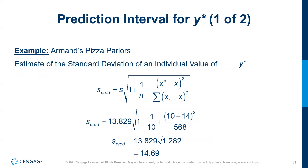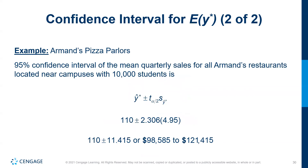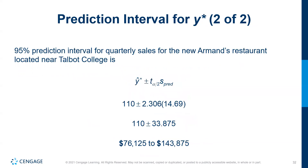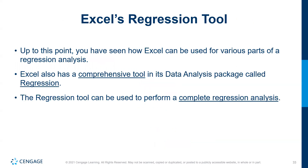The prediction interval is slightly different. We calculate the standard deviation of the predicted value — including a factor of 1 plus 1/n — which comes out to about 14.69. So y-hat of 110 plus or minus t(α/2) times 14.69 gives a wider range. The reason the prediction interval is wider is because we're basing it on one predicted value rather than the average.